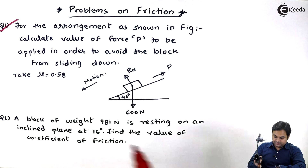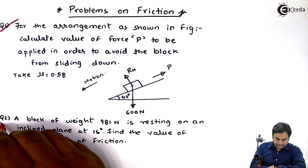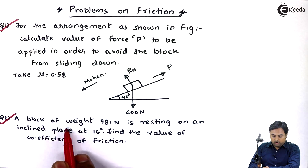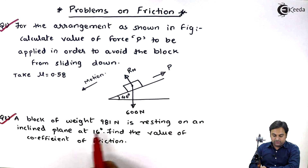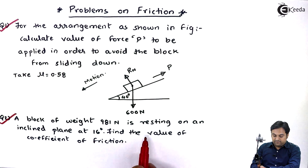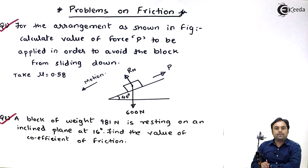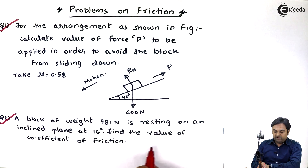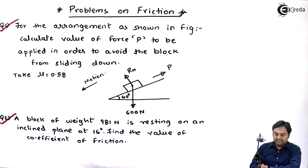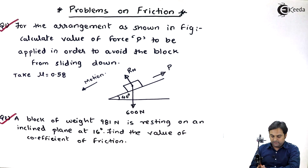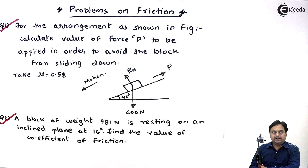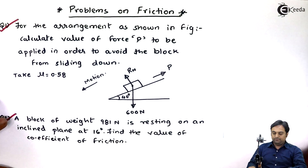Let us take question number two. A block of weight 981 Newton is resting on an inclined plane at 16 degrees. Find the value of coefficient of friction. The diagram is not given like it was in question number one, but some hints are provided with which we can draw the diagram, so let us start with this problem.